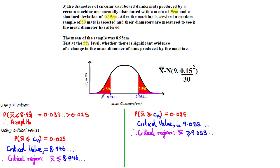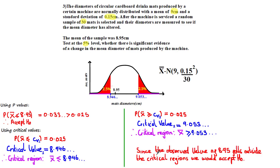So now we have our two sets of disjoint critical regions. We can define the other critical region as the set of observed values that are greater than or equal to 9.053. The observed value from the sample was found to be 8.95, which lies somewhere in between the critical values. Since the observed value of 8.95 falls outside the critical regions, we would accept H0. I hope you found this tutorial useful as a different approach to hypothesis testing.